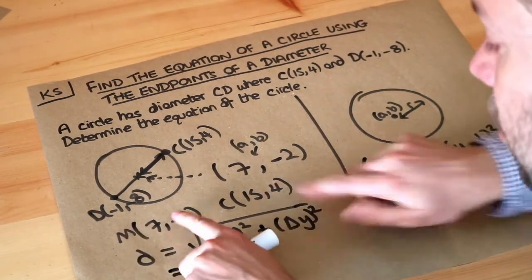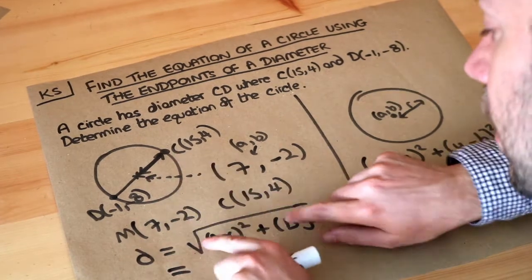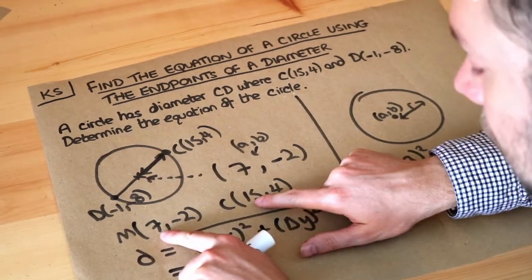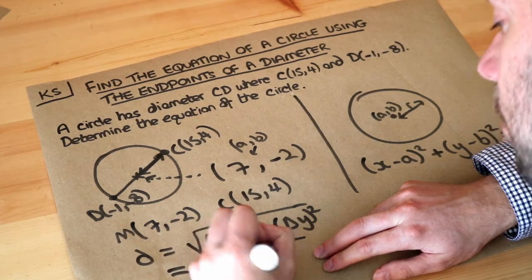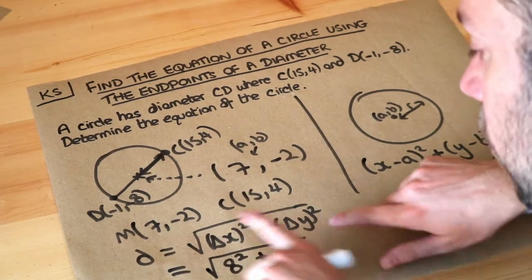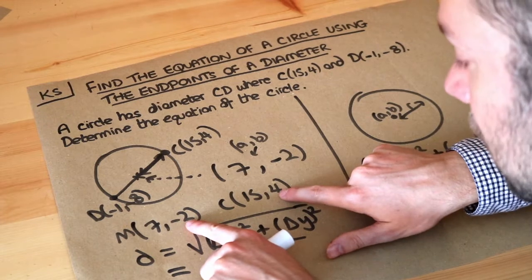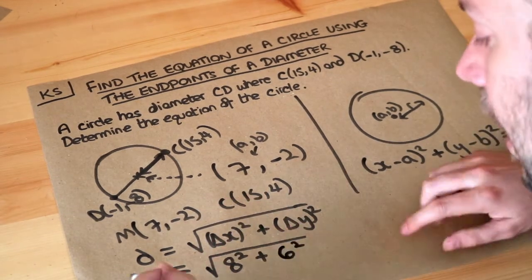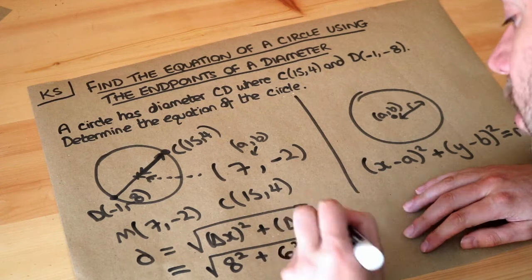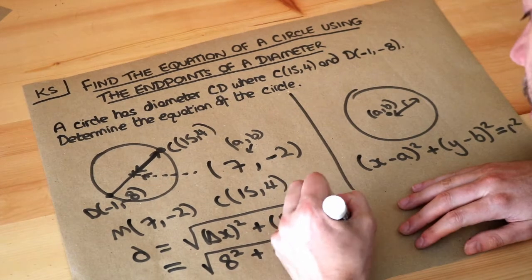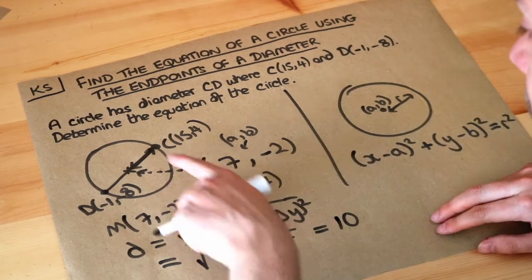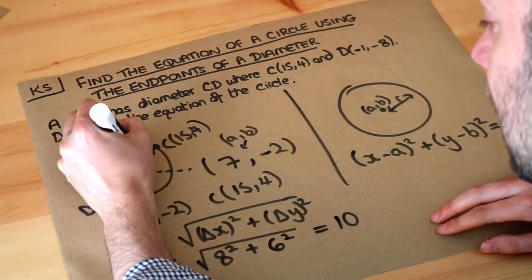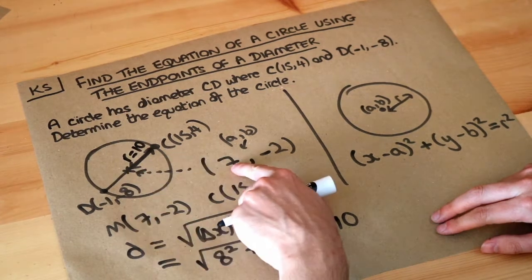So for these two particular points, what's the change from 7 to 15? Well it's 8, so it's the square root of 8², plus, well, what's the change in y? Well from -2 to 4, that's a difference of 6, so it's 6². And if you did that in the calculator - I just recognized this as a Pythagorean triple - you get 10. So now we've got everything we need. We've got the radius of the circle is 10, and we've got the center of the circle, (7,-2).